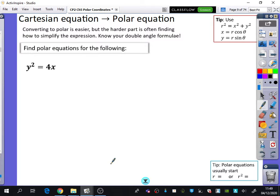The last part we want to do is going the other way around, from Cartesian to polar. I think this is easier, but the harder part is often finding how to simplify the expression. You definitely need to know your double angle formulas. The tip is that usually your polar equations need to start with r equals or r squared equals. That's just the standard form you're going to be aiming for in these kinds of questions.